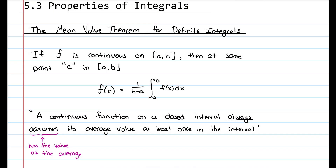Now let's look at the mean value theorem for definite integrals. If f is continuous on the interval a to b, then at some point c in a to b, f of c equals one divided by b minus a times the integral of f of x from a to b. This means that at some point, when you plug in a number c to the original function, the output equals the average of the interval — a specific y value equal to the average area under the curve.